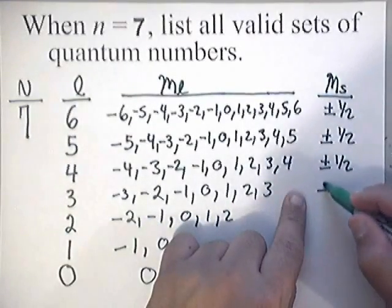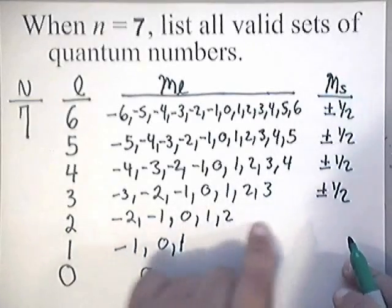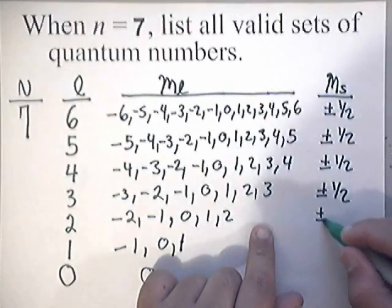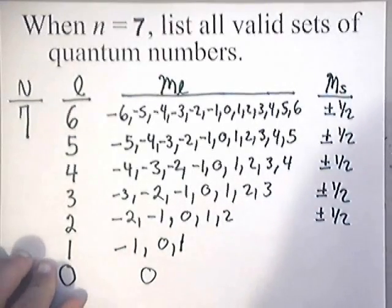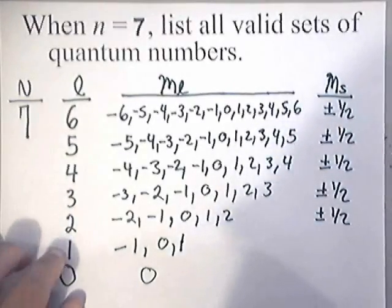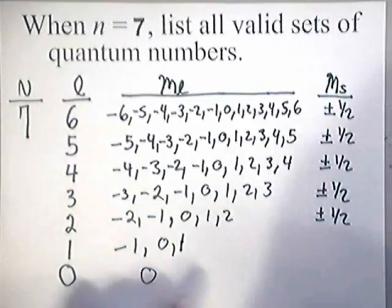So just make sure that the number of positive or negative 1 halves you write down are equal to the number of rows that you have written down of orbital quantum numbers and magnetic quantum numbers, and you should be fine.